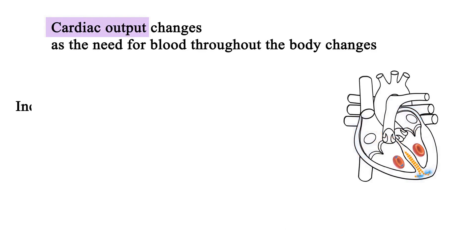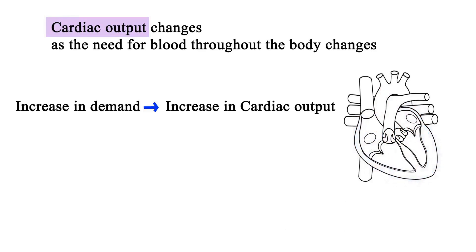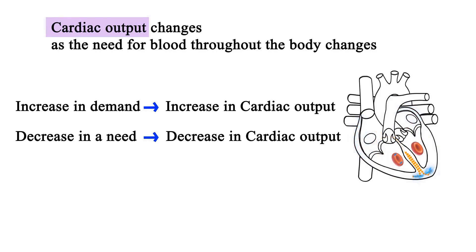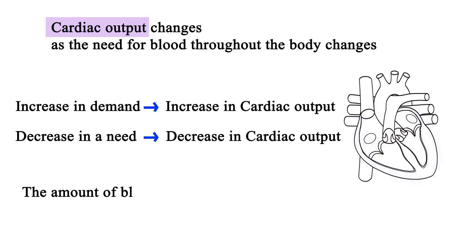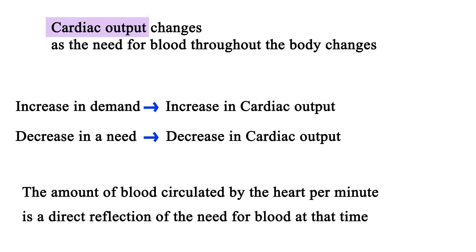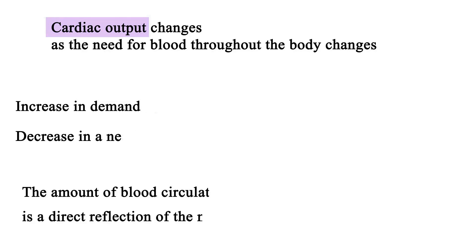An increase in demand for blood leads to an increase in cardiac output, and a decrease in need for blood leads to a decrease in cardiac output. The amount of blood circulated by the heart per minute is a direct reflection of the need for blood at that time.